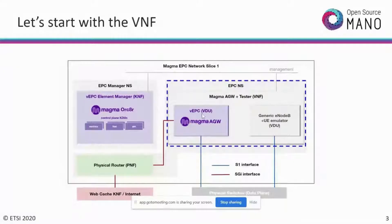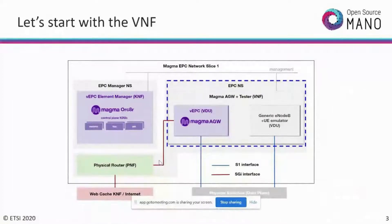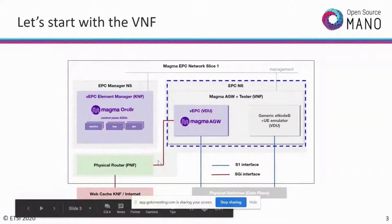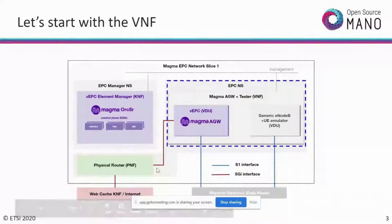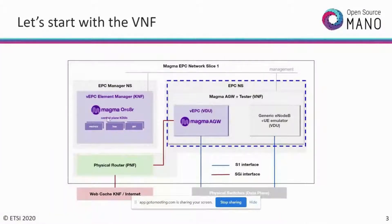Coming to the networking: we have two VDUs, a management network, and a network connecting to the physical router. This router is emulated in our VIM. We need to connect our Magma access gateway to this PNF, and OSM needs to know about this PNF. We'll cover more about PNF in upcoming sessions. The KNF element manager is Helm-based, and that also has an upcoming session.